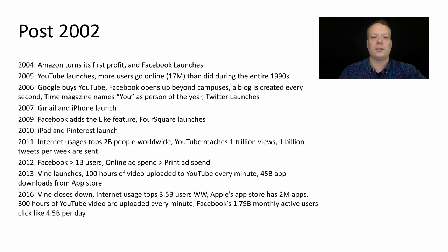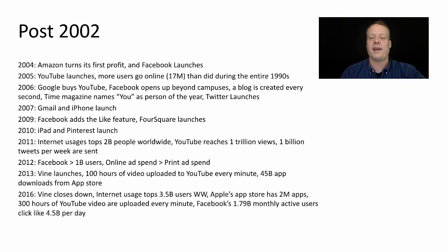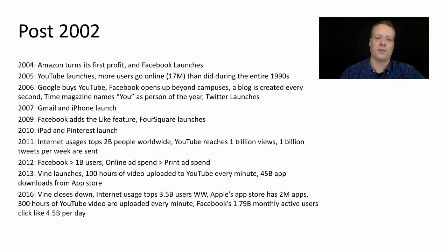After 2002, things take a turn. In 2004, Amazon turns its first profit and Facebook launches. Amazon finally proves that you can make money on the internet — several years after the end of the first dot-com bubble — which is kind of interesting. There was all this hype around it, yet it's not until later that Amazon actually shows the profitability of the internet.